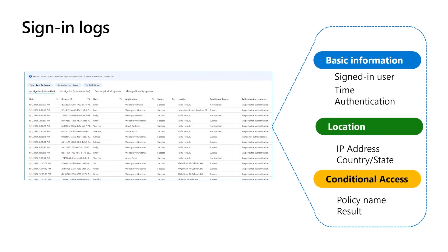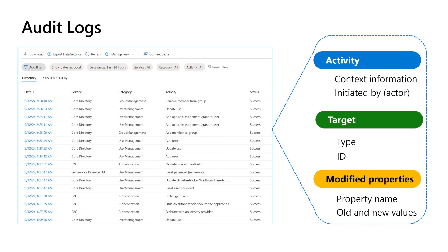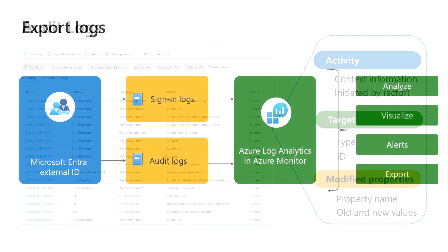The actions in Microsoft Entra External ID are tracked and available to you through a variety of logs. Sign-in logs provide a detailed account of all sign-in attempts, allowing you to track unauthorized access attempts, recognize possible security incidents, and analyze user behavior. Audit logs capture events in Microsoft Entra External ID, like changes to application settings, security groups, and users. They contain information about the activity, like the application or individual who made the changes, the target object, and the modified properties.